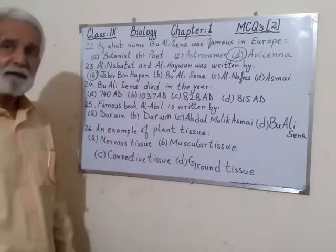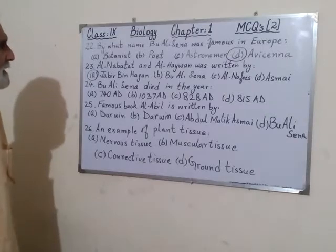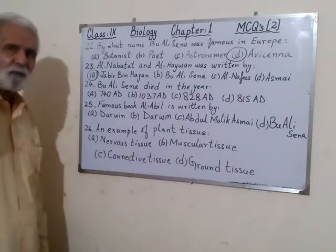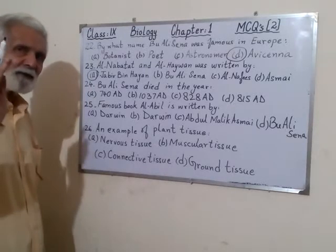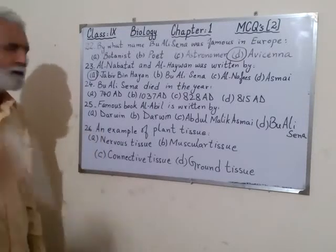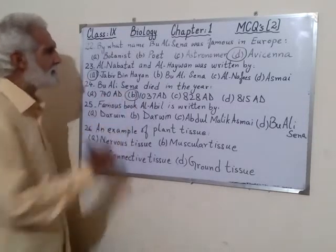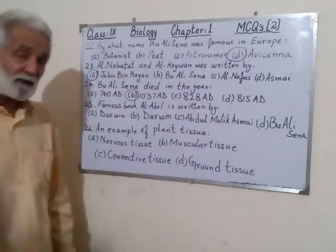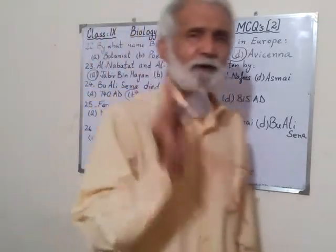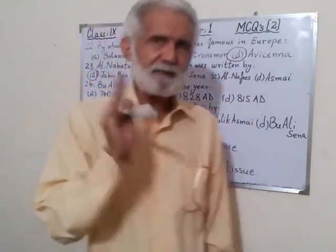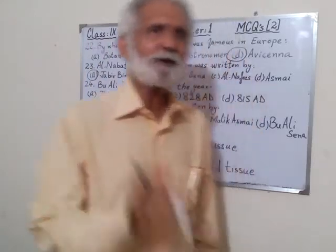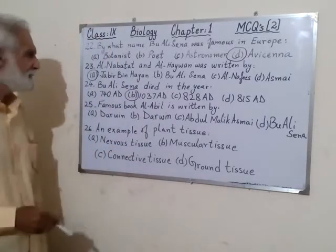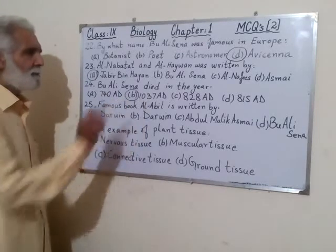Number 24: Ibn Sina died in which year? Remember he was our famous Muslim scientist who died after the year 1000. He died in 1037 AD — not 740, not 828, not 815. I will repeat again: you have to learn all the birth dates and death dates. That is very important for your MCQs, as you will find many questions related to these.